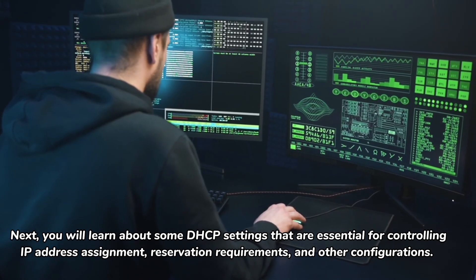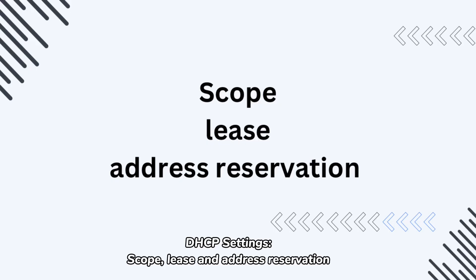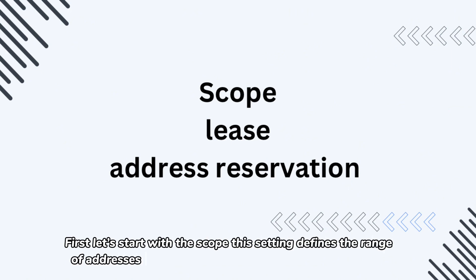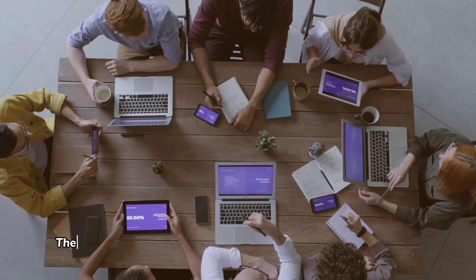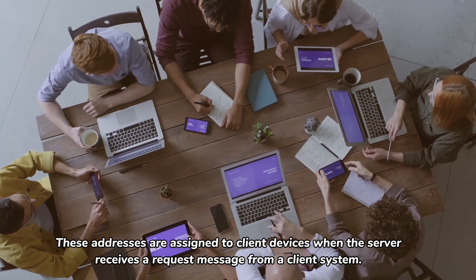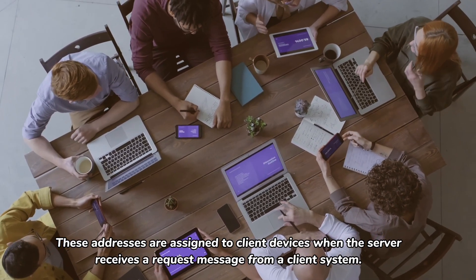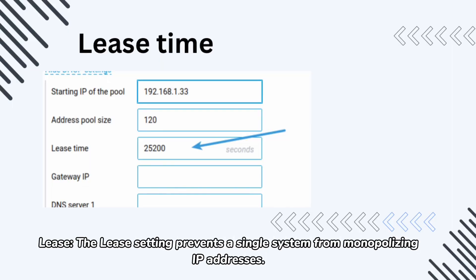Now let's look at some essential DHCP settings for controlling IP address assignment: Scope, Lease, and Address Reservation. The Scope setting defines the range of addresses available in the DHCP server address pool. These addresses are assigned to client devices when the server receives a request message from a client.